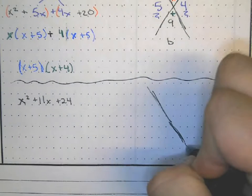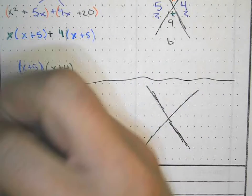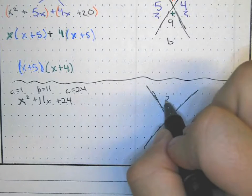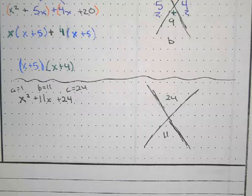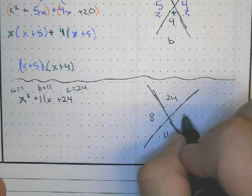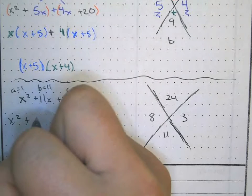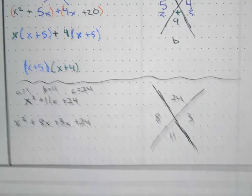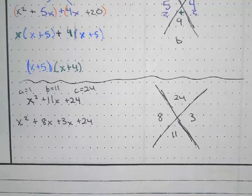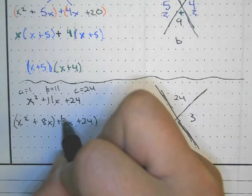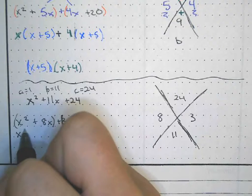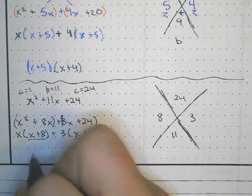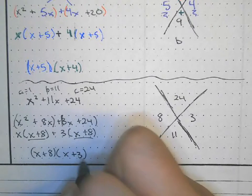Hopefully you tried it on your own. For this one: a equals one, b equals eleven, c equals 24. So a times c is 24 and b is 11. Numbers that multiply to 24 and add to 11 are 8 and 3. So I split the middle term: x² + 8x + 3x + 24. Grouping, I factor x out of the first group to get x(x + 8), then factor 3 from the second to get 3(x + 8).